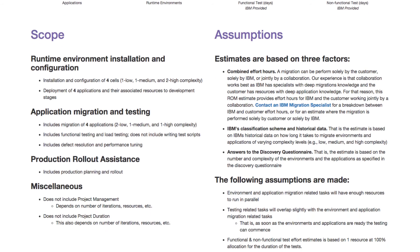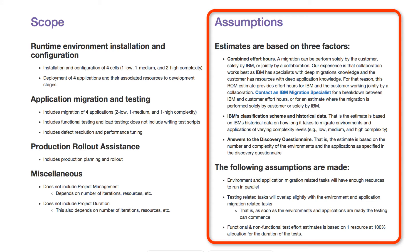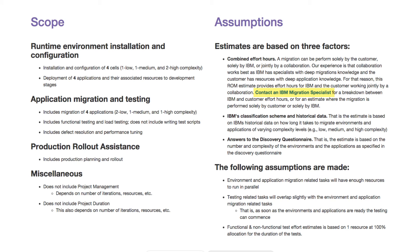Continuing to the next section, we'll see the scope — what is and is not included in this estimate. The assumptions section lists some of the assumptions made in our formulas to derive this estimate. One key thing to note is that the effort estimate provided here is a combined effort — IBM works in conjunction with the customer. This ballpark estimate includes both sets of hours, not just IBM's. You may want to contact your sales rep or click the email link here to contact our team directly for a free detailed cost estimate of your application migration.